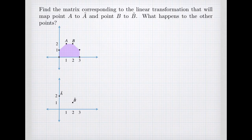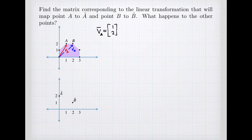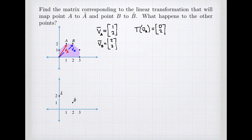We're going to start by thinking about our points as vectors. We think of vector VA as the vector with coordinates 1, 2. Then we have another vector VB, which is going to be 2, 2. We have a linear transformation that takes vector VA and sends it to a new location: the vector 0, 2. At the same time, point B is sent to a new location: 2, 1.